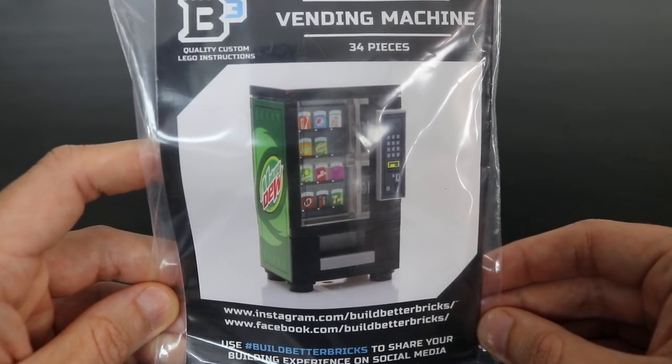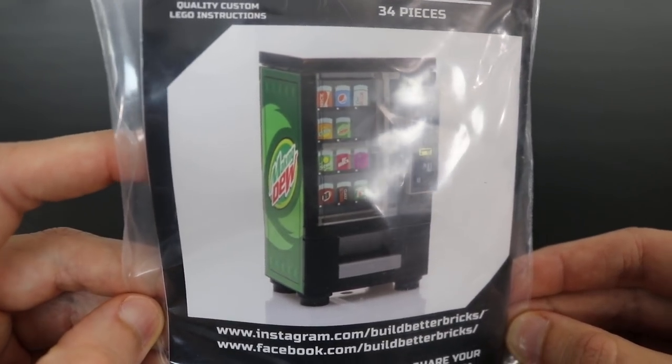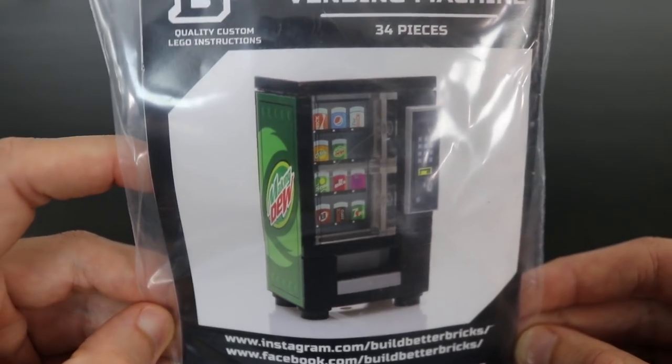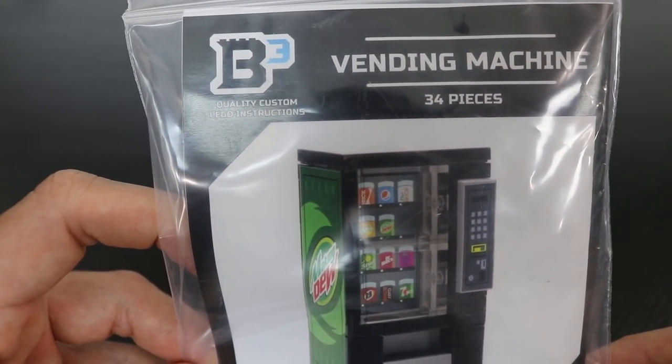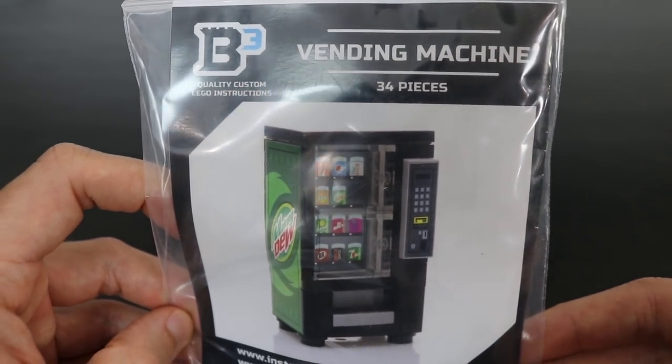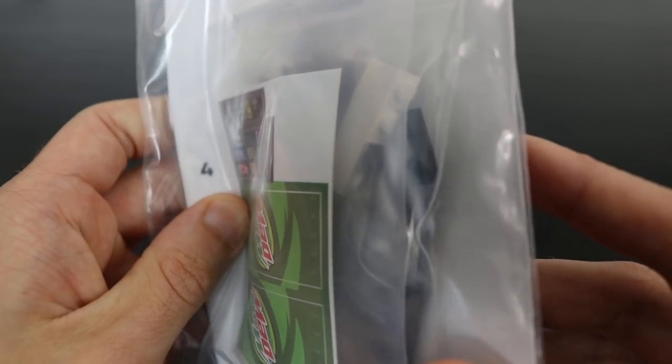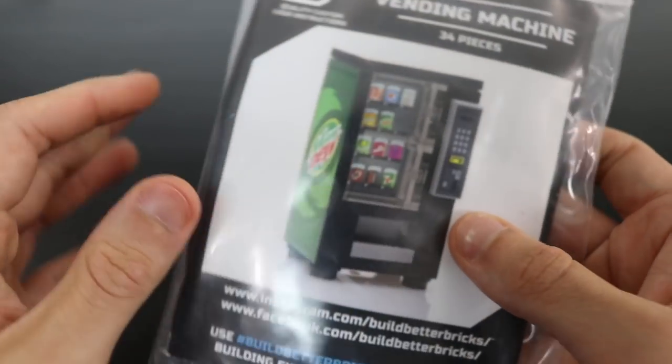Welcome back Brick Detectors. Today I want to share something we got in mail time that I thought was really neat. It's this vending machine made to look like a Mountain Dew vending machine, but on the side here it says Making Dew, which I thought was really clever. This was sent to us by a company known as Build Better Bricks. While this isn't a sponsored video, they did send this to me for free. This is 34 pieces and while it's not an actual Lego set, they did include official Lego pieces and stickers to make it look real fancy.